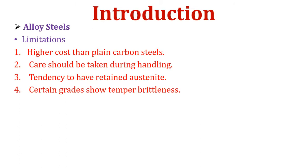Drawbacks of alloy steel. First, higher cost than plain carbon steel — due to more than one element being added, it builds more cost. Second, care should be taken during handling. While handling two metals, we should know whether both metals are soluble in each other or have affinity to each other. Third, tendency to have retained austenite — some elements generally form some retained austenite. And last, certain grades show tempered brittleness.